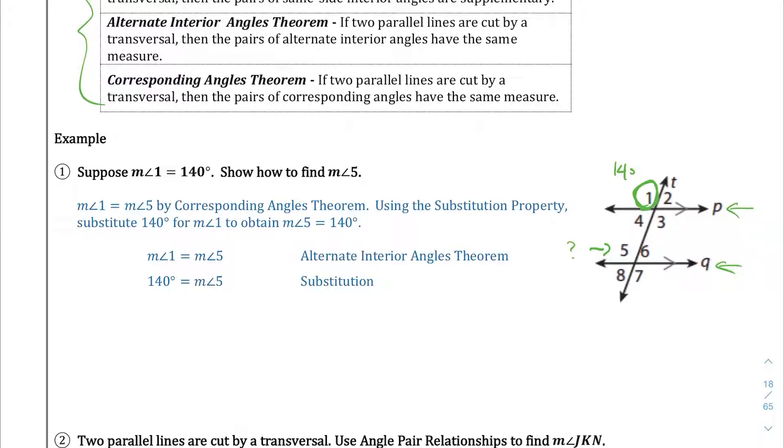In this example, if you look at the corresponding angle theorem, the corresponding angle theorem tells us that if you have two parallel lines P and Q that is cut by a transversal, the line T, then corresponding angles are going to be equal.